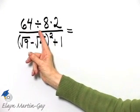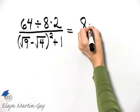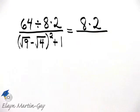And 64 divided by 8 is 8. So I have 8 and then times 2 so far above the fraction bar.